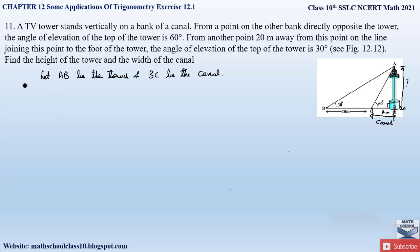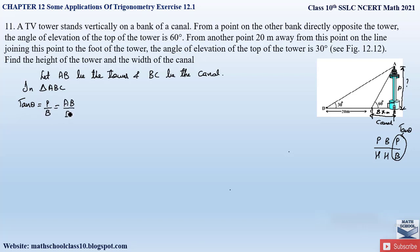Let AB be the tower and BC be the canal. Consider right-angle triangle ABC. In triangle ABC, side AB is the perpendicular and BC is the base. The ratio perpendicular over base corresponds to the tan trigonometric ratio. So we apply tan θ = perpendicular / base, where perpendicular is AB and base is BC, and θ = 60°. Therefore, tan 60° = AB / BC, and BC = x meters.